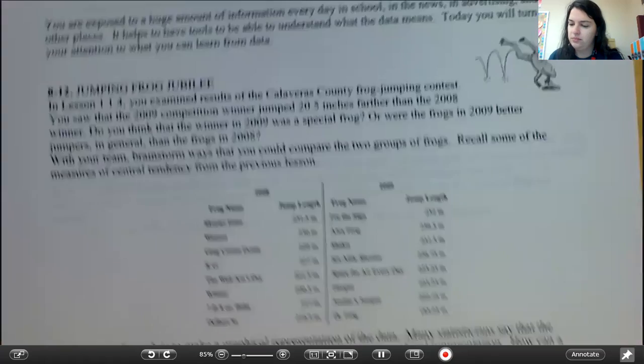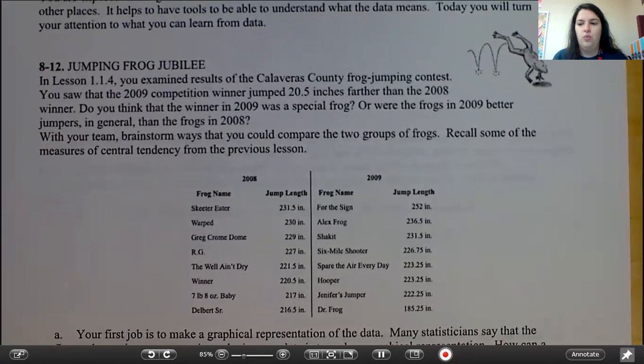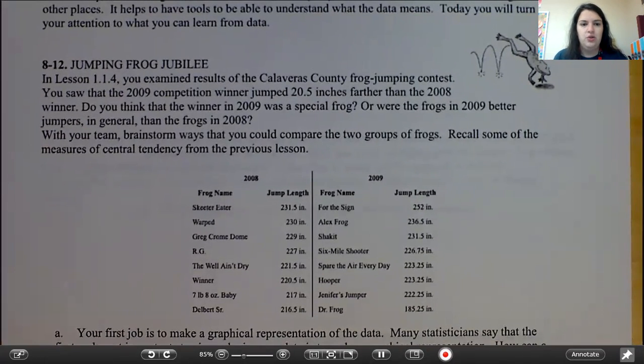So, we're going to take a look at 8.12 to start. In lesson 1.1.4, you examined results of the Calaveras County Frog Jumping Contest. You saw that in 2009, competition winner jumped 20.5 inches farther than the 2008 winner. Do you think that the winner in 2009 was a special frog, or were the frogs in 2009 better jumpers in general than the frogs in 2008? With your team, brainstorm ways that you could compare the two groups of frogs. Recall some of the measures of central tendency in previous lessons.